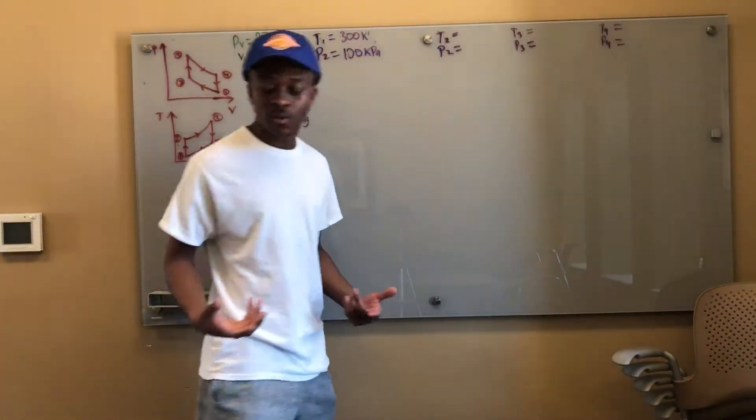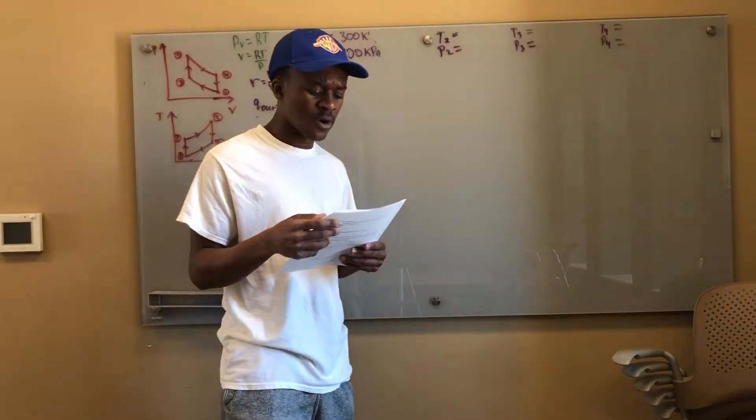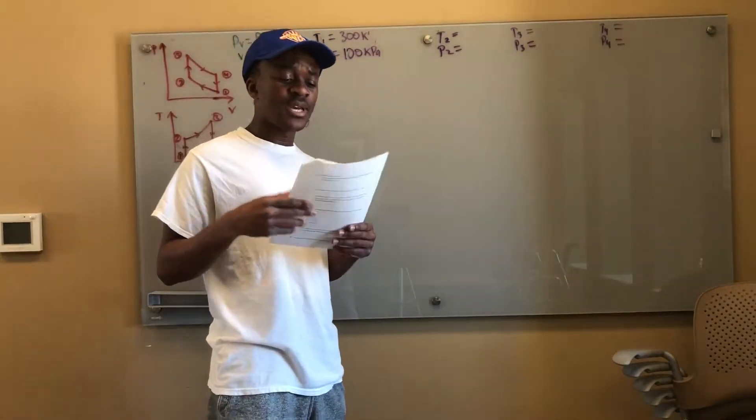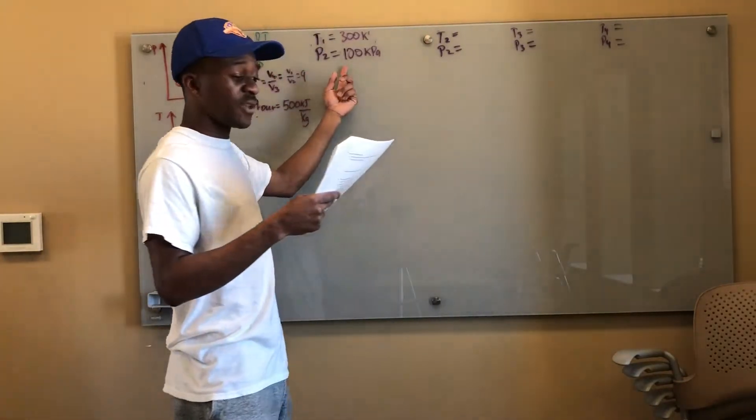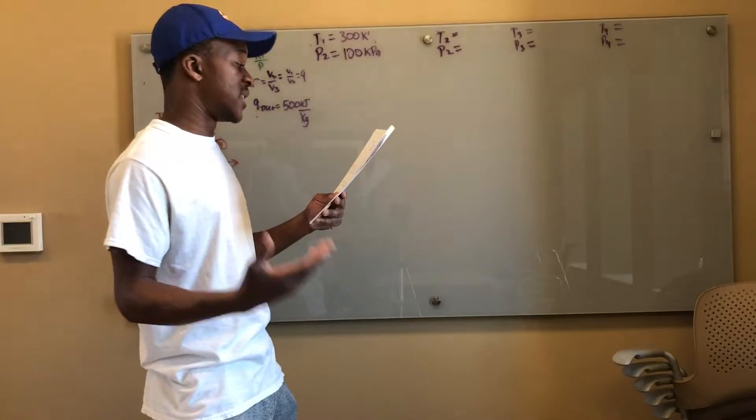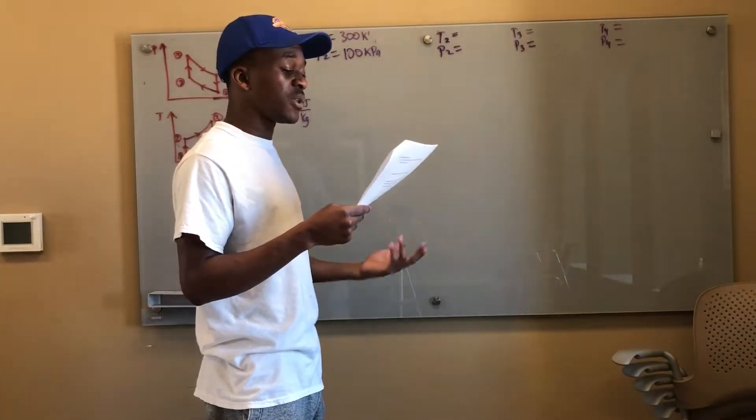Hello everybody. So today we're going to be tackling an Otto cycle question. It's similar to the diesel cycle question I did before. Air in an Otto cycle begins the compression process at 100 kilopascals and 300 degrees Kelvin. It has a compression ratio of 9 and the combustion process produces 500 kilojoules per kilogram of heat.